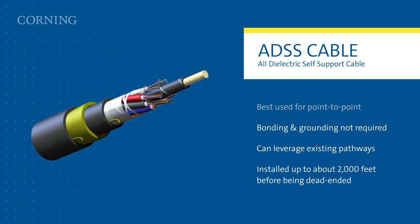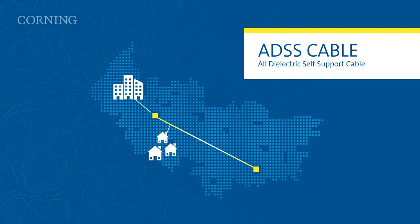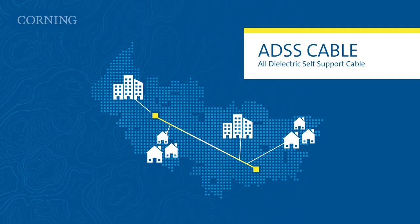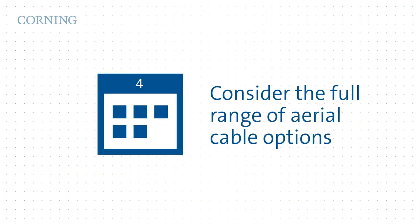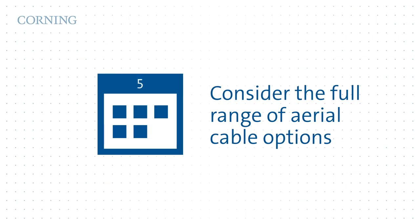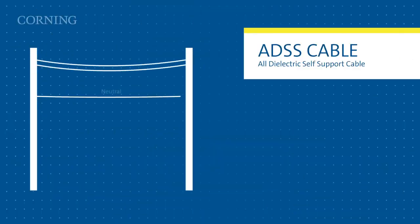The demands on fiber infrastructure are changing with growing FTTX opportunities, particularly in rural communities. Utilities are deploying networks differently than they have in the past. As you look forward, consider the full range of aerial cable options to optimize your OPEX and CAPEX spends. Installation methods and costs vary depending on which cable you choose and where you place the cable.